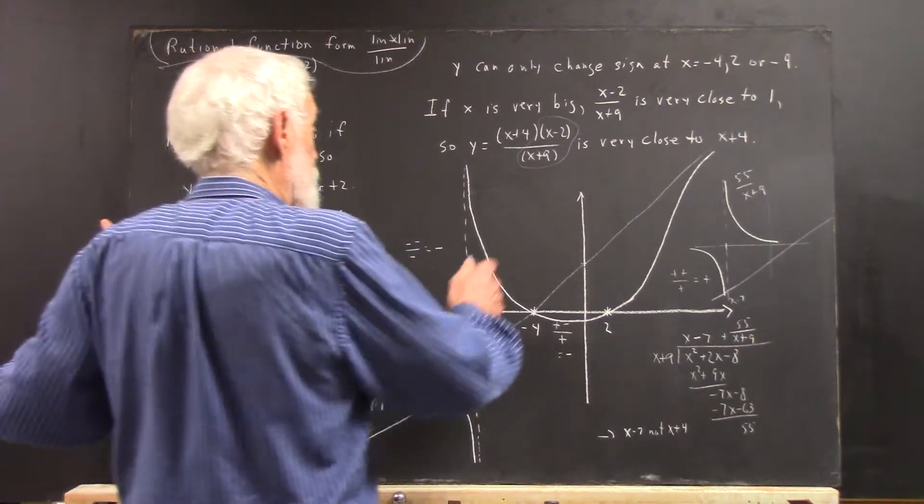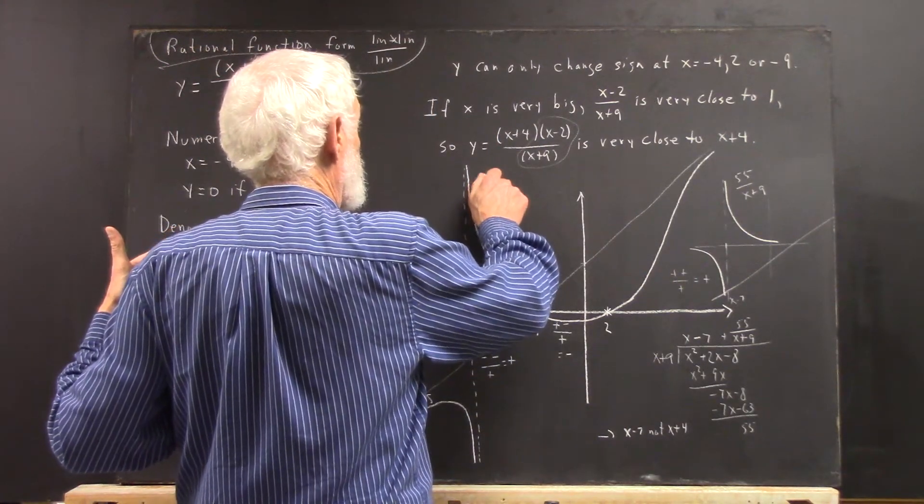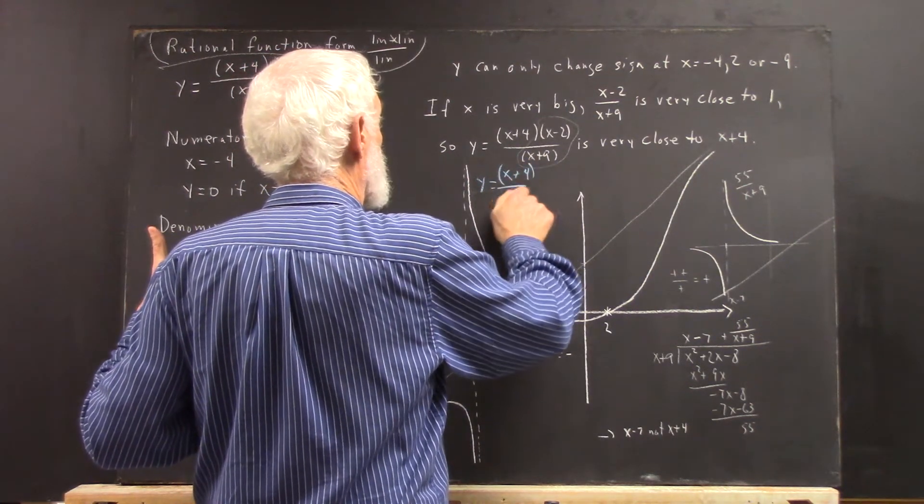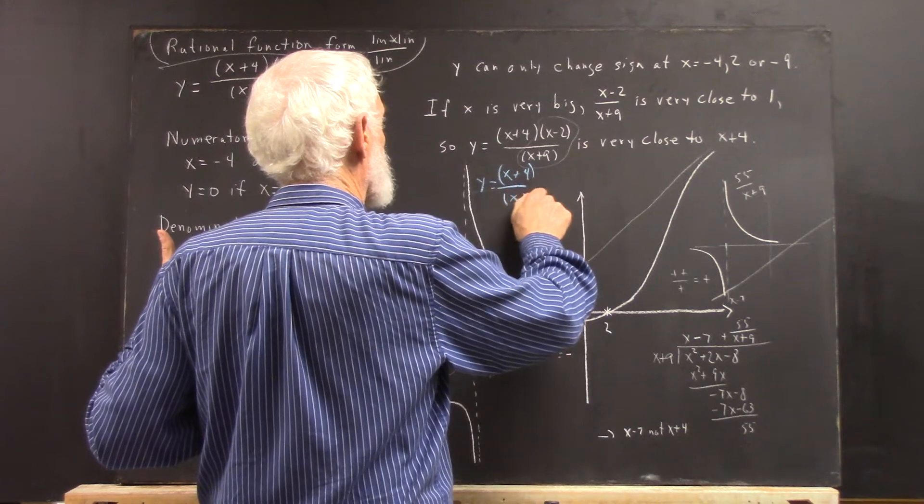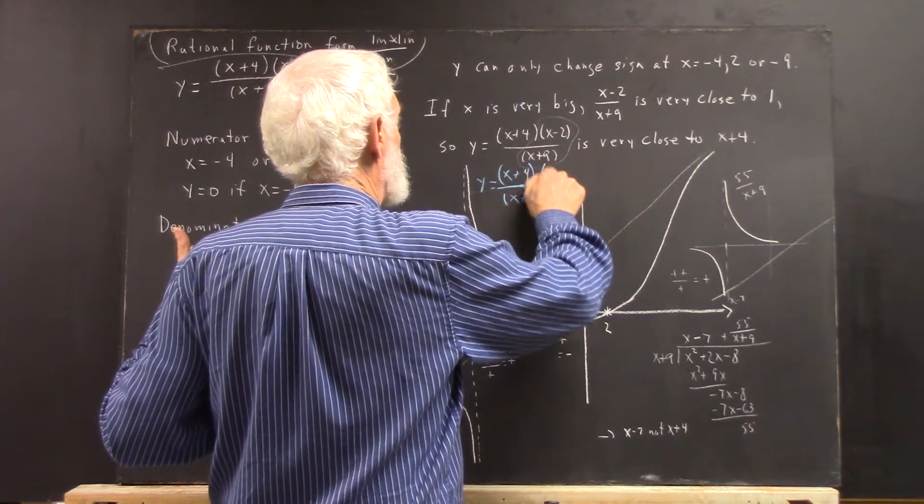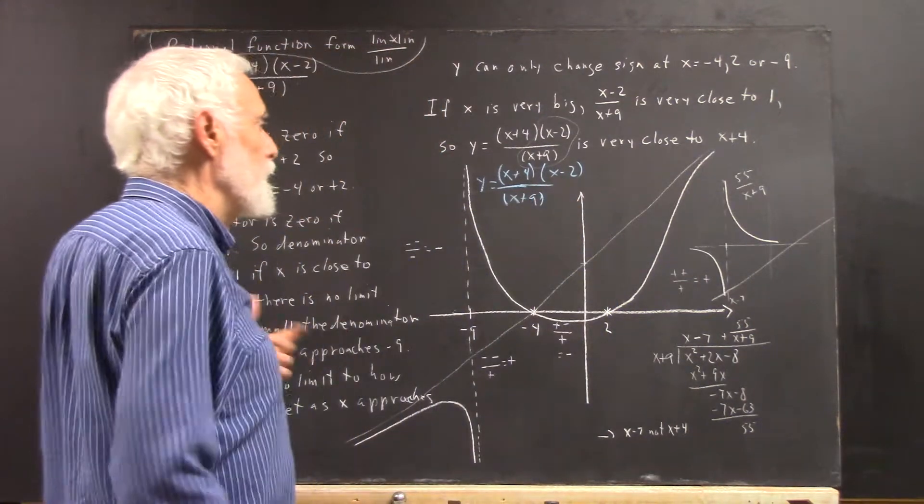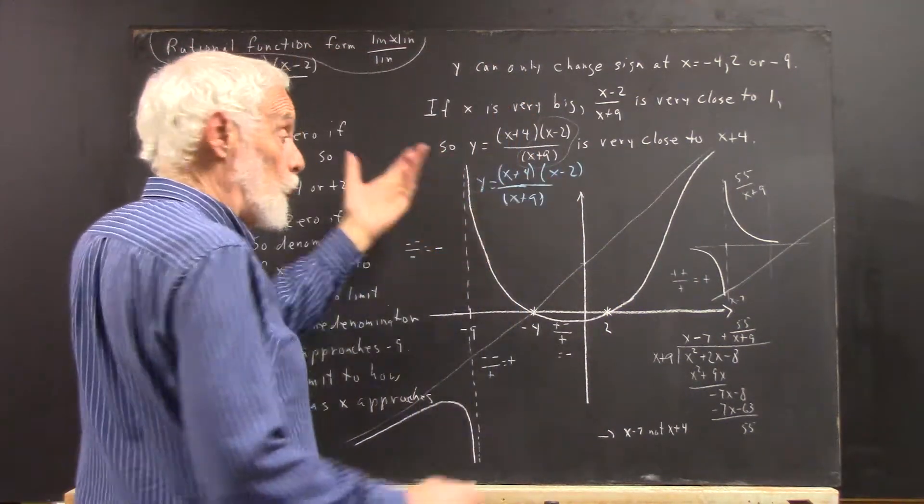However, I could have also said that y equals (x+4)/(x+9) times (x-2) is very close to x-2. Why?